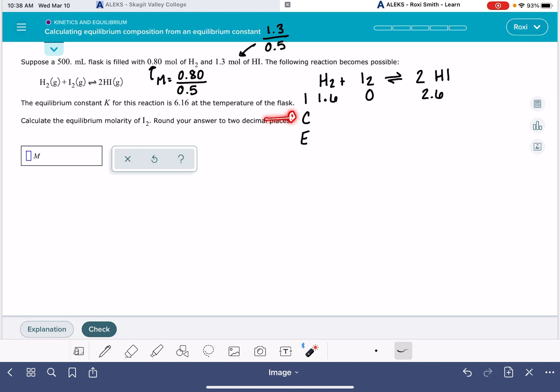So now we need to fill in our change row. This is where we use that symbol X to indicate how much each substance is changing. I always like to use negative signs on the reactant side and positive signs on the product side. We use the stoichiometric coefficient for each substance. So our change in this reaction is minus X, minus X, and plus X. And then in our equilibrium spot, we just do the math right above it.